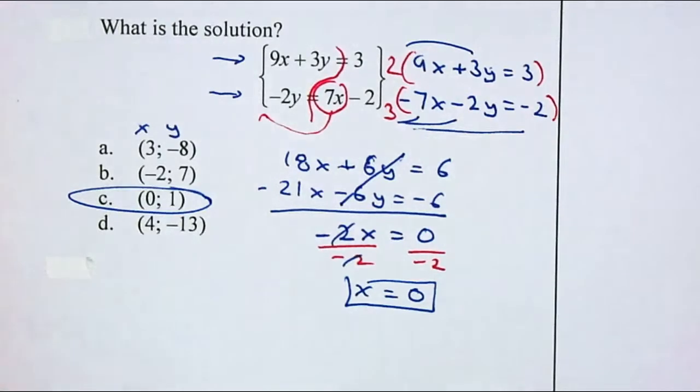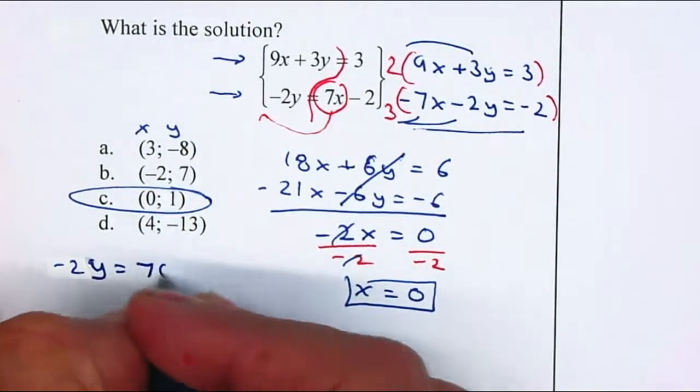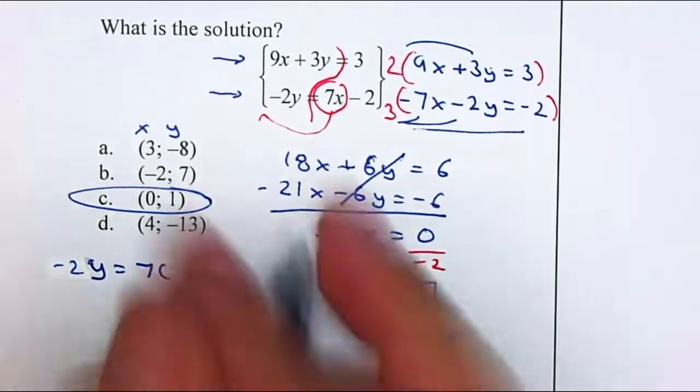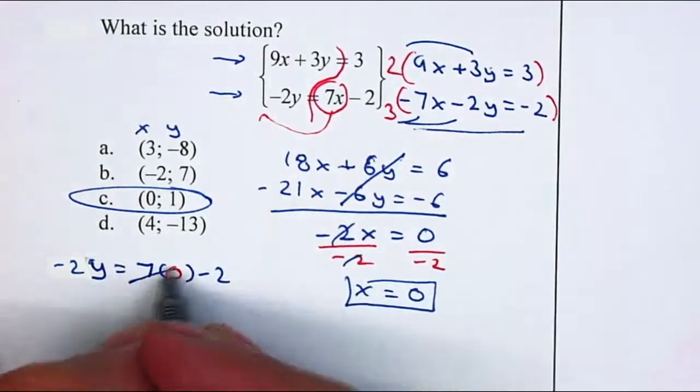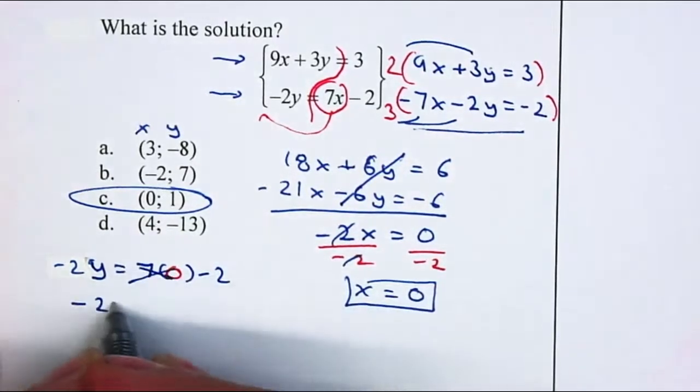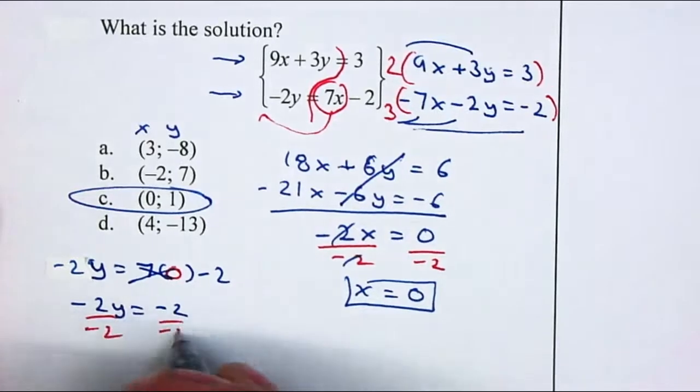Now, if you want to find the y value, we can just plug in. So if I plug in the 0 into the second equation. Or if you prefer, you can plug into the first one. It's fine. 7 times 0 is 0. So negative 2y is equal to negative 2. Divide by negative 2, divide by negative 2. The y value is 1.